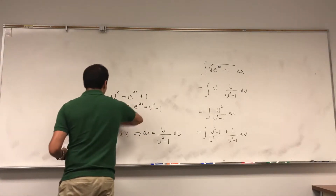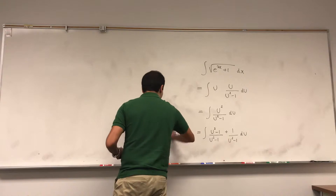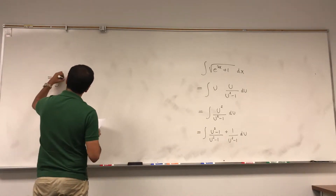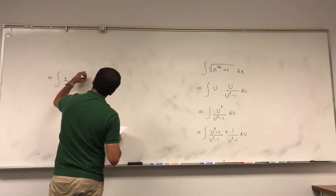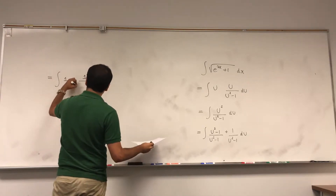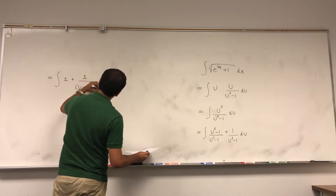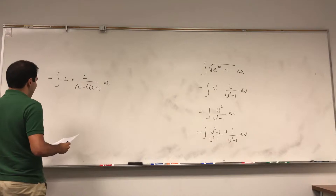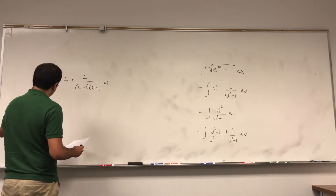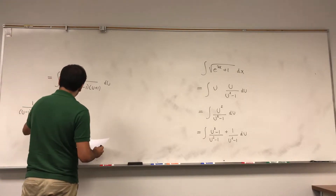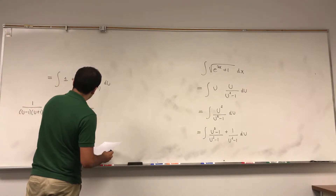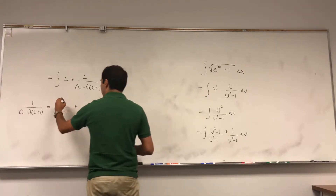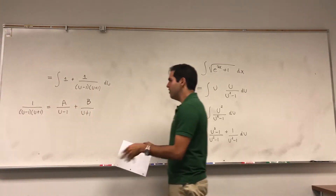And you're left with a not too bad integral. So this becomes the integral of 1 plus 1 over u squared minus 1, which you can write as 1 over u minus 1 times u plus 1 du. And this is just a very standard partial fraction decomposition. So you want to write it as something over u minus 1 plus something else over u plus 1.